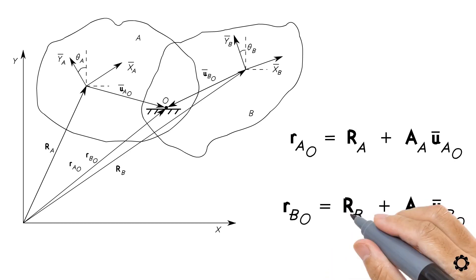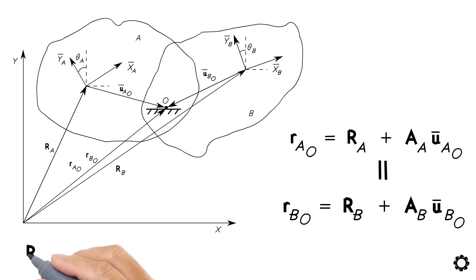As these two equations are equivalent, we can say that RA plus AA U bar AO equals RB plus AB U bar BO.